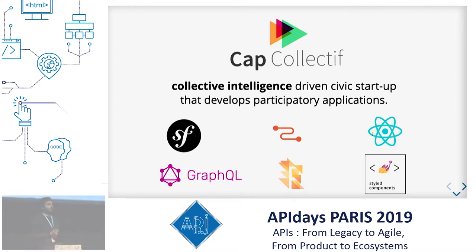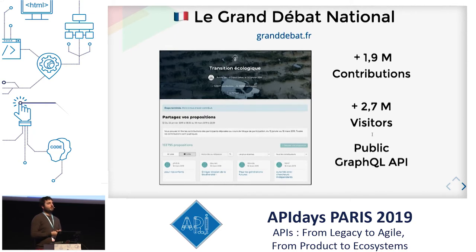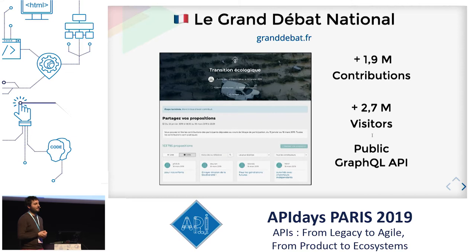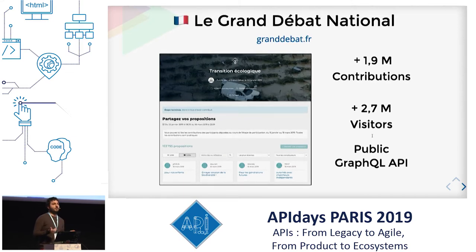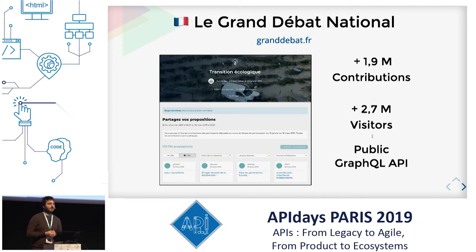I work at Cap Collectif. We are what we call a civic tech startup in the open government domain. And of course, we use GraphQL. Just to give you an example of what we do — you probably heard of the yellow jacket crisis. And in order to answer this crisis, the French government ordered us a website where every citizen could add ideas and share their point of view. So we created GrandDébat.fr, and it was the first time we launched a public GraphQL API.